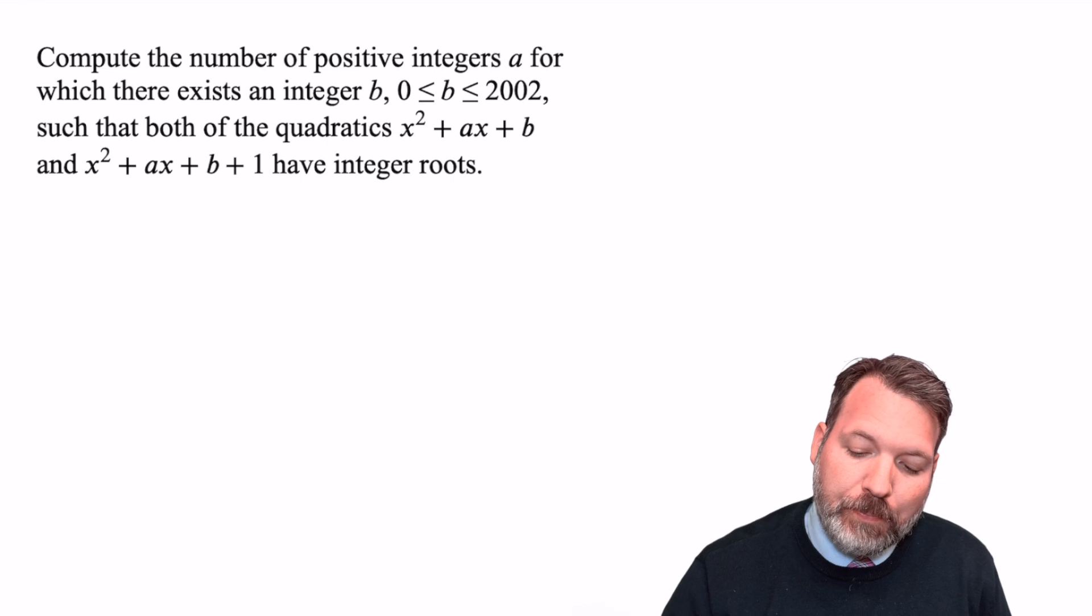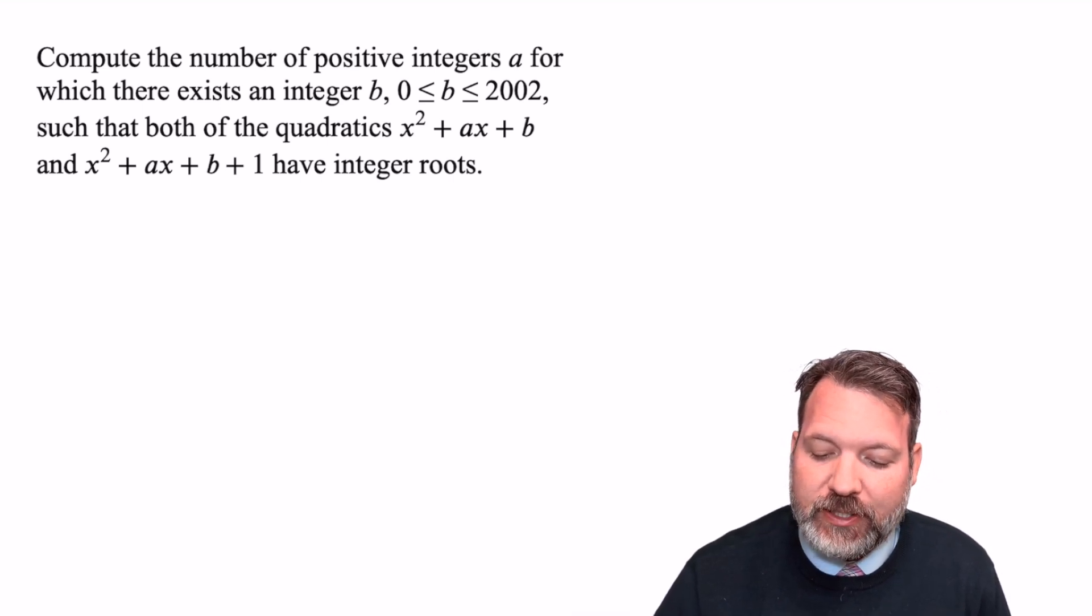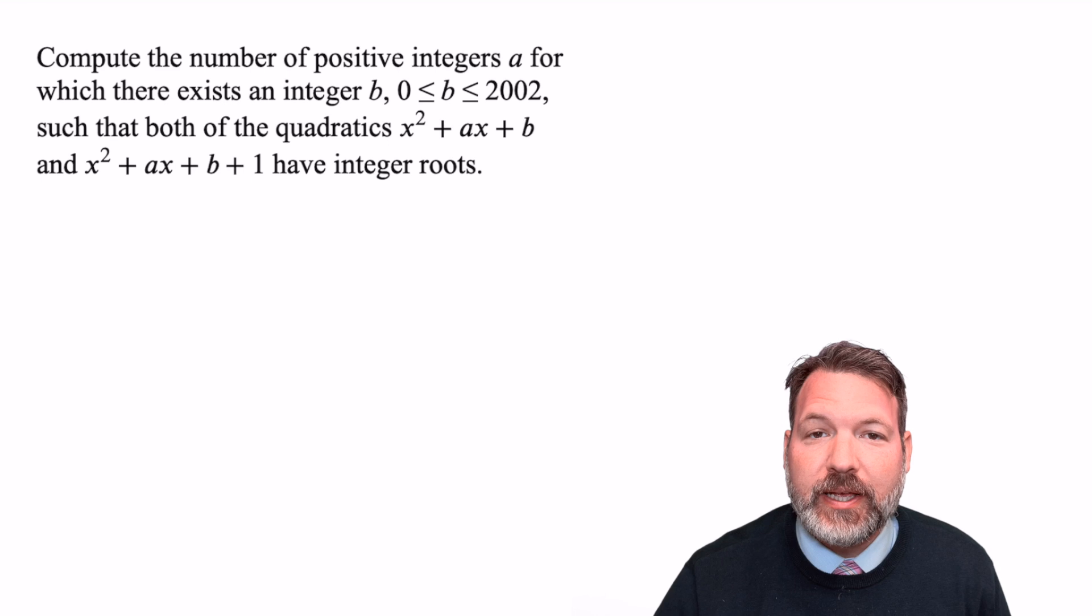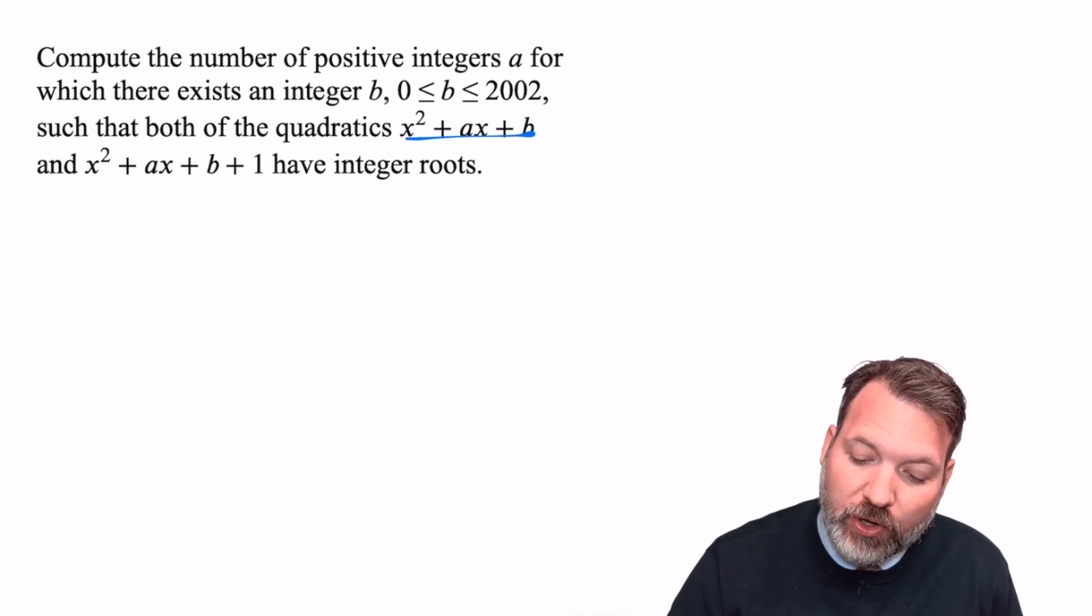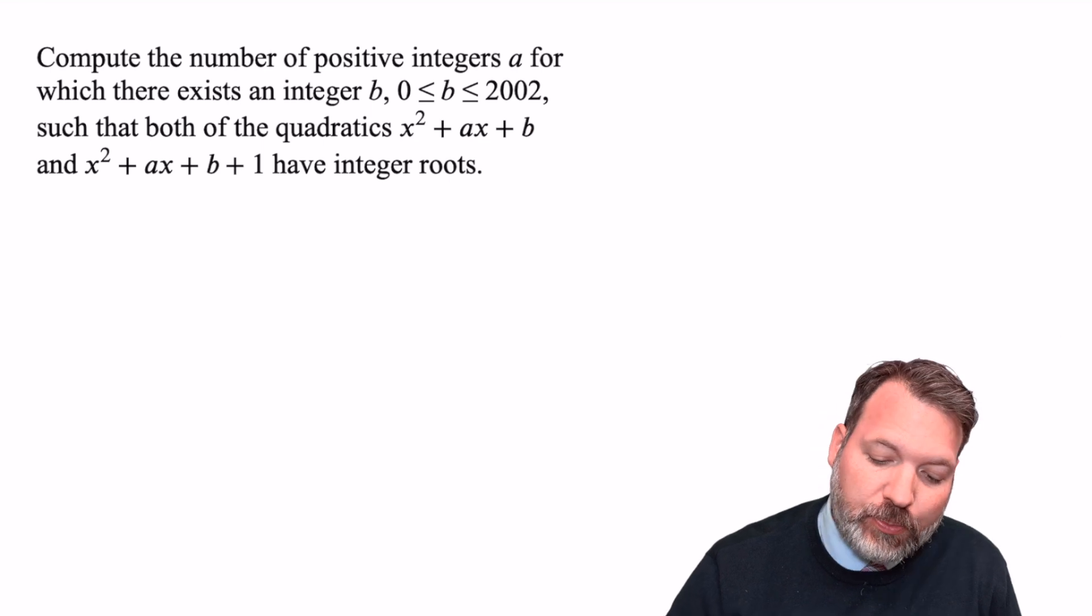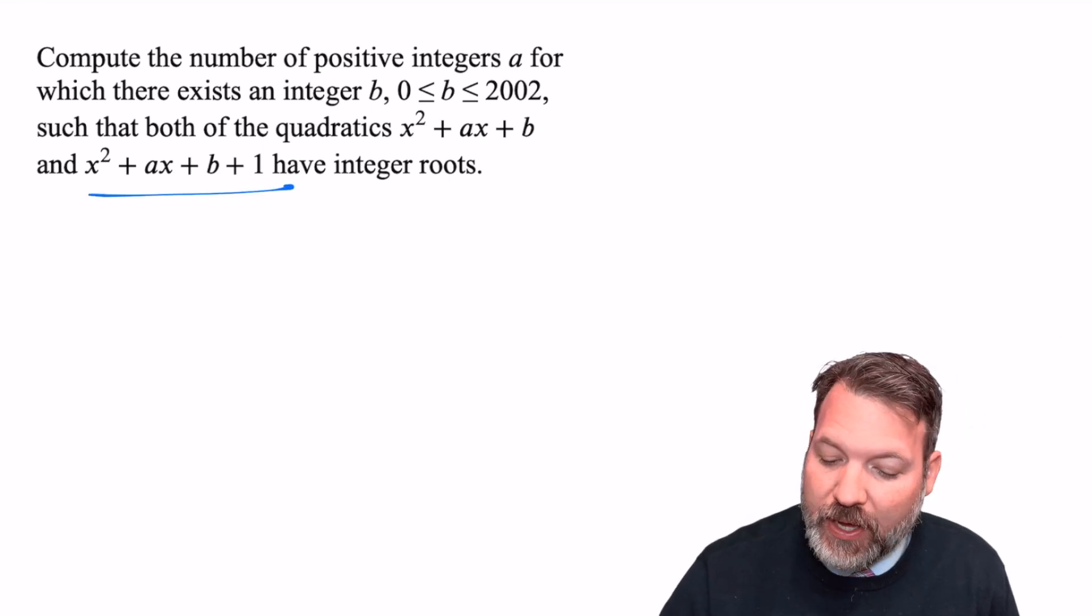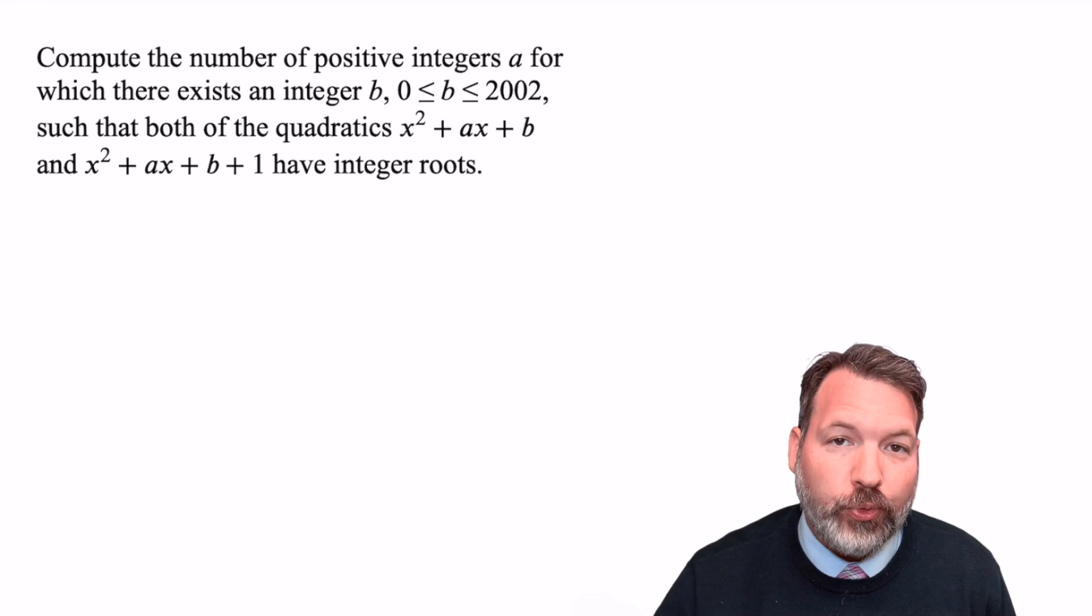The question is this: Compute the number of positive integers a for which there exists an integer b, 0 ≤ b ≤ 2002, such that both of the quadratics x² + ax + b and x² + ax + b + 1 have integer roots.